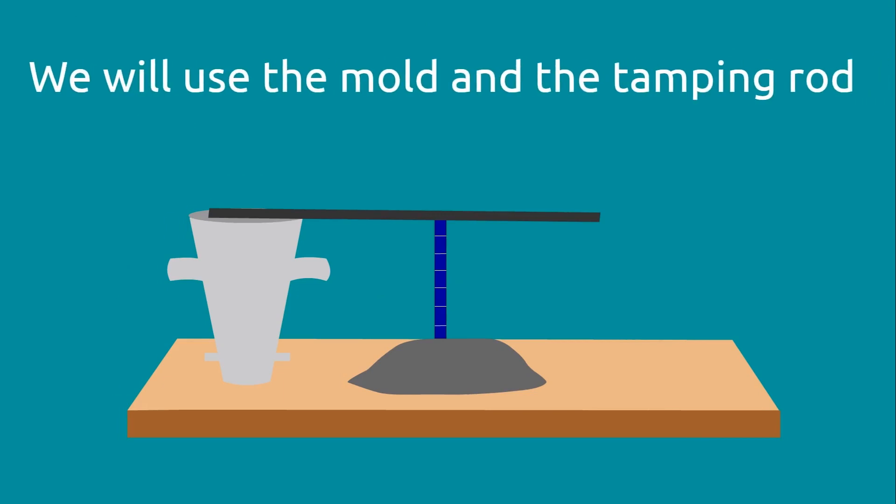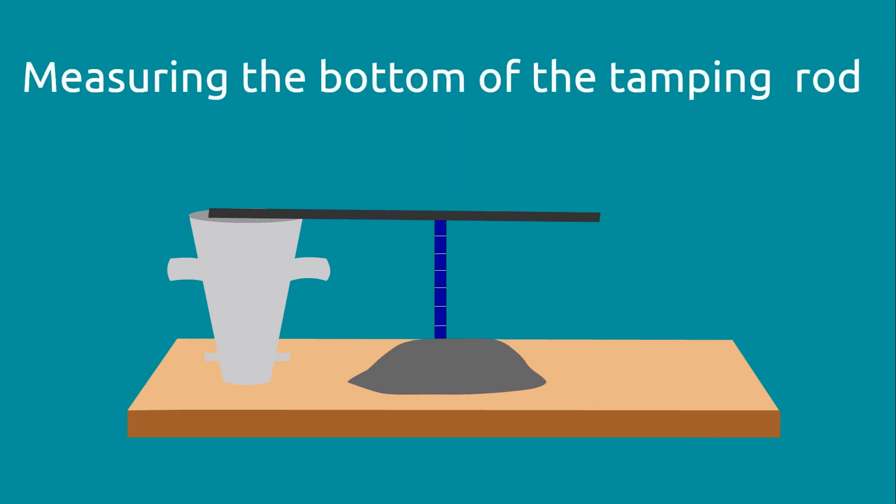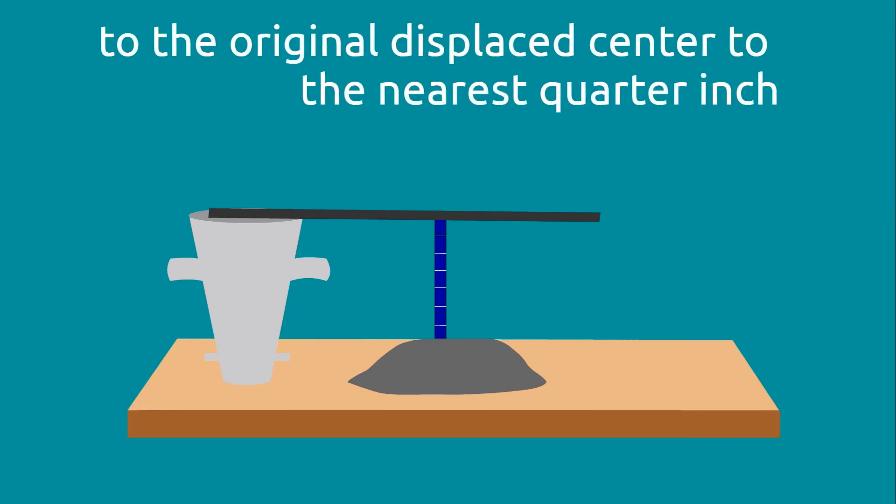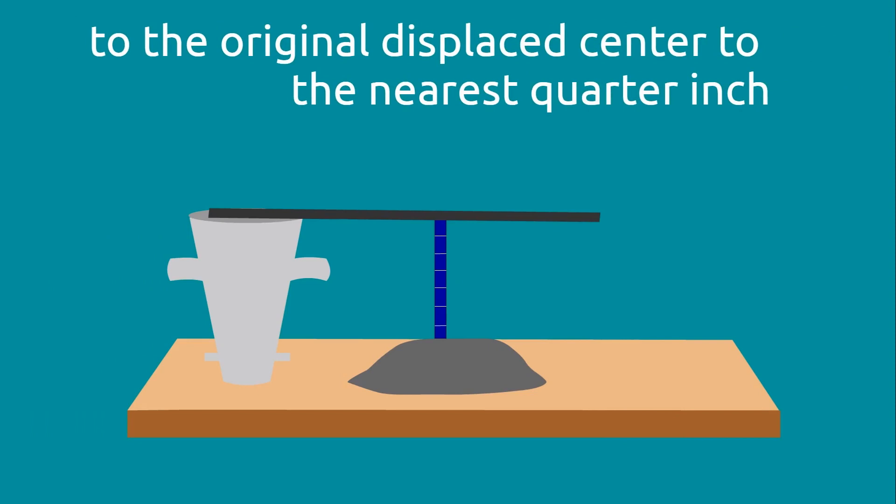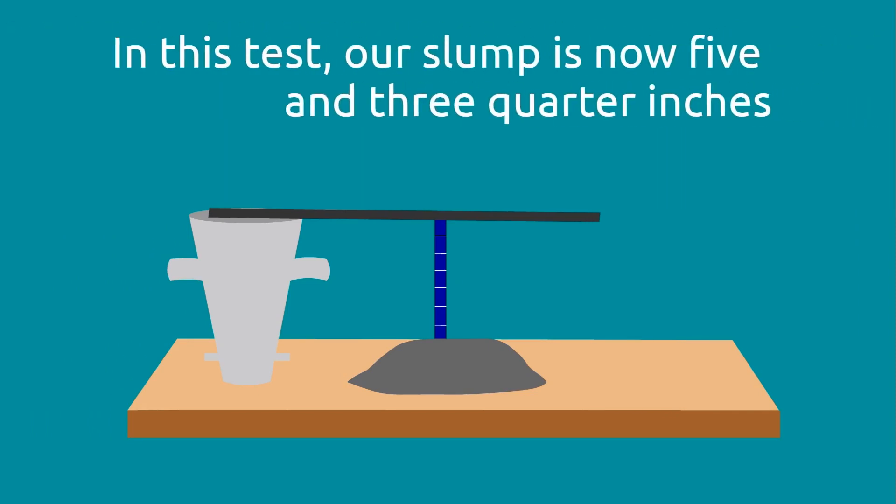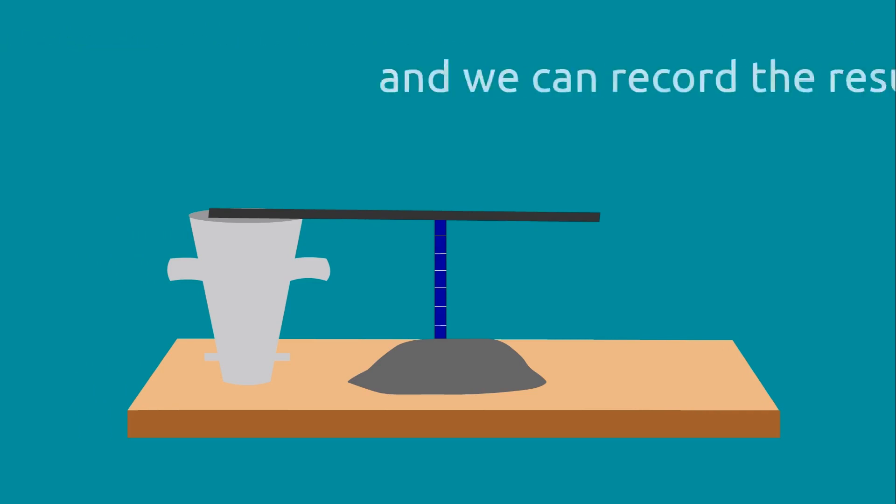We will use the mold and the tamping rod, measuring from the bottom of the tamping rod to the original displaced center to the nearest quarter inch. In this test, our slump is 5 and 3/4 inches, and we can record the results.